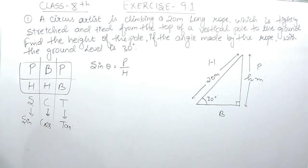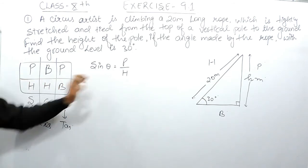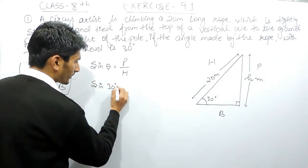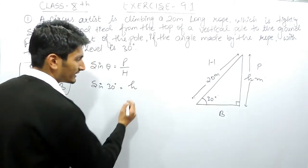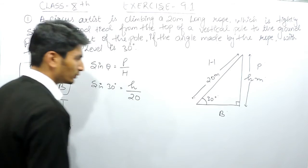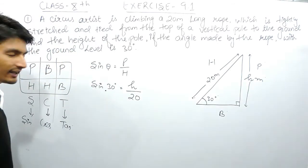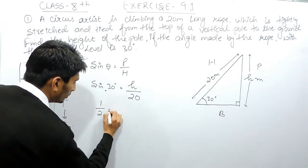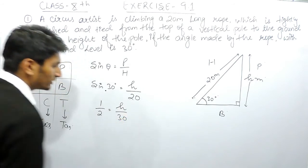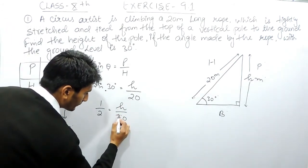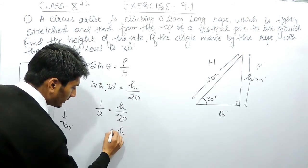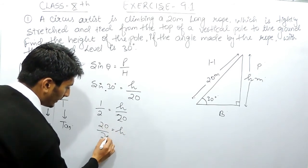For sine, it is perpendicular upon hypotenuse. So sine 30 degrees equals h (the perpendicular we want to find) over 20 meters (the hypotenuse). We know from the previous chapter that the value of sine 30 degrees is 1/2. So 1/2 = h/20.